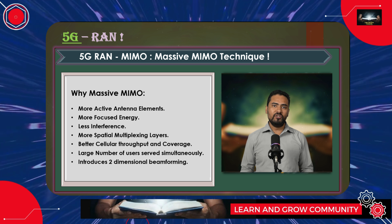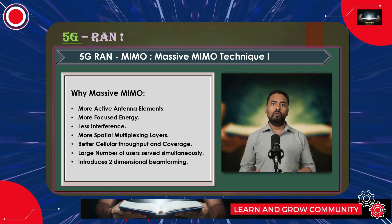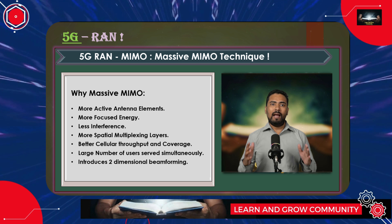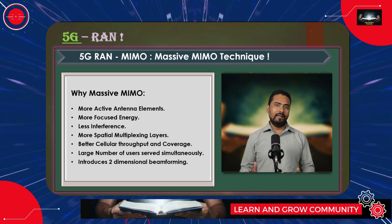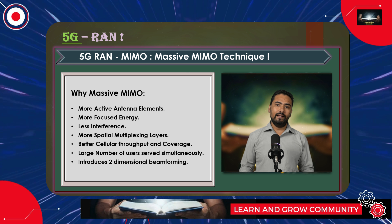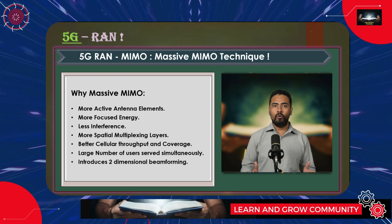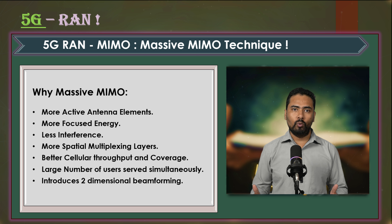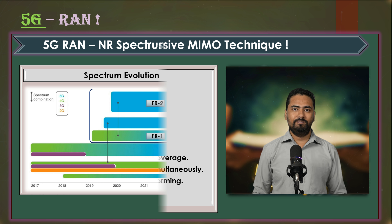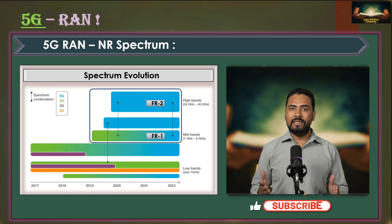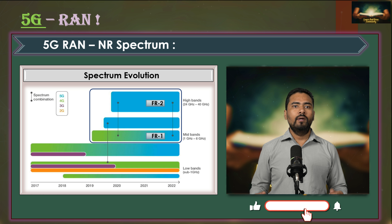In the last session we talked about the MIMO concept in 5G and discussed how 5G RAN can benefit from multiple input multiple output concepts. Now in this session we will be talking about 5G spectrum.